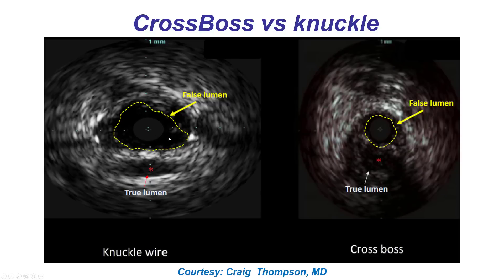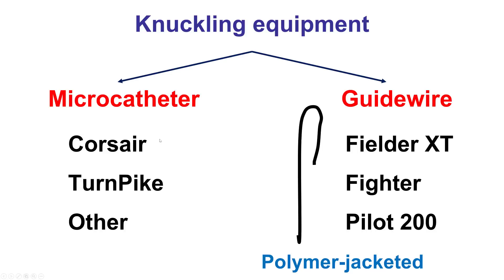There are advantages and disadvantages of using a knuckled wire versus a CrossBoss. The CrossBoss creates a smaller false lumen than the knuckled guide wire, but the knuckled guide wire can be more useful for avoiding side branches.